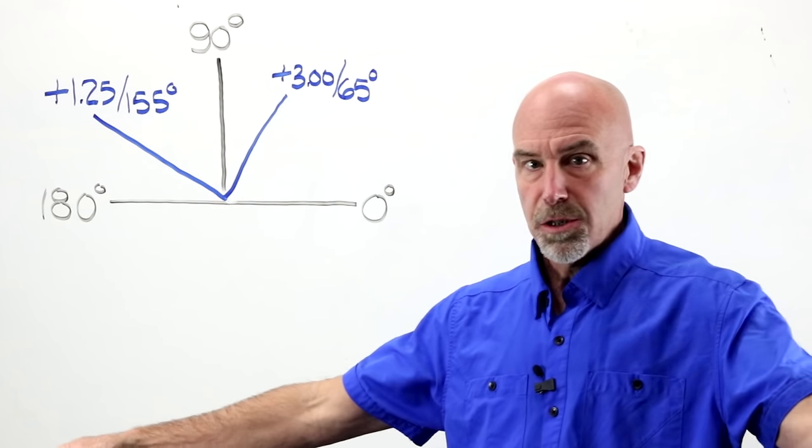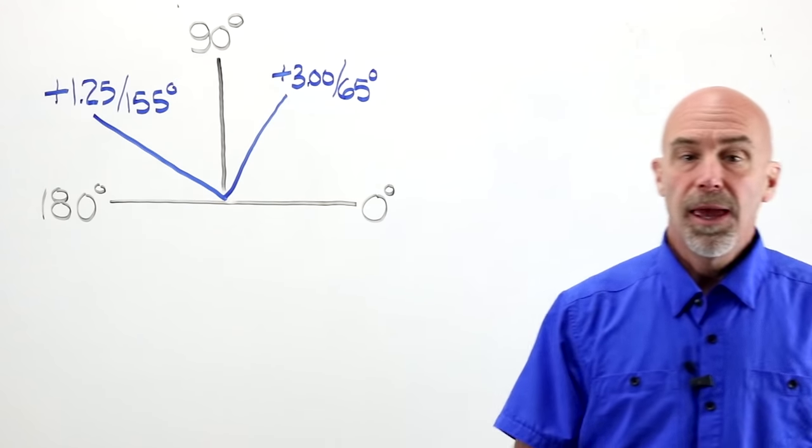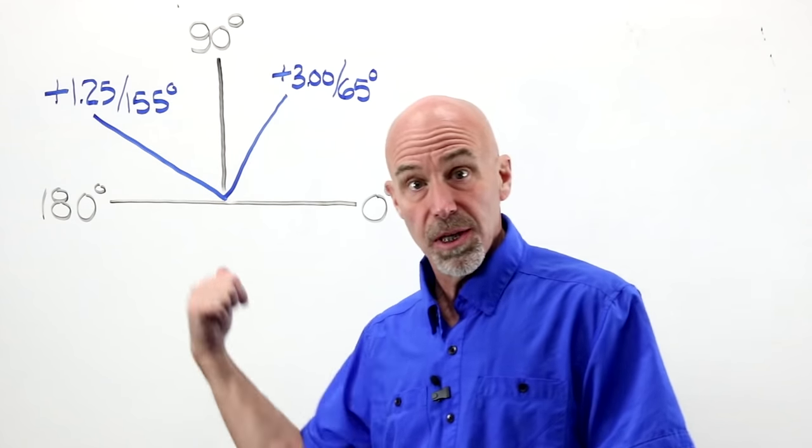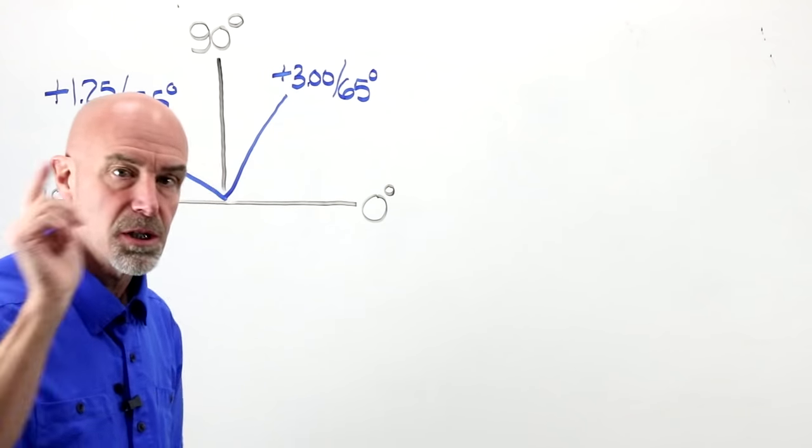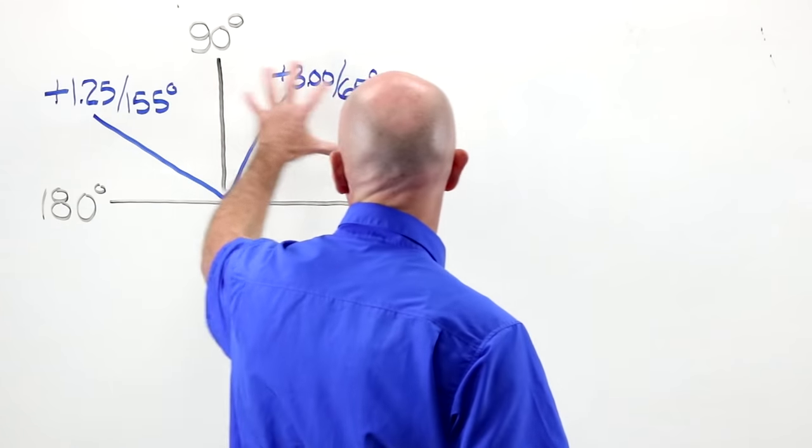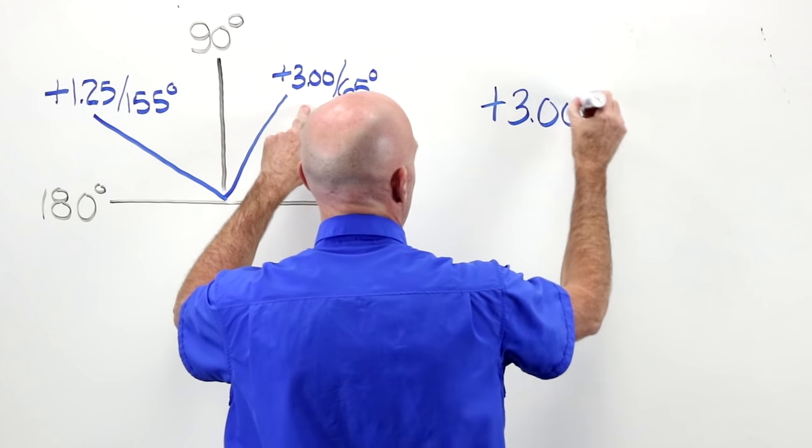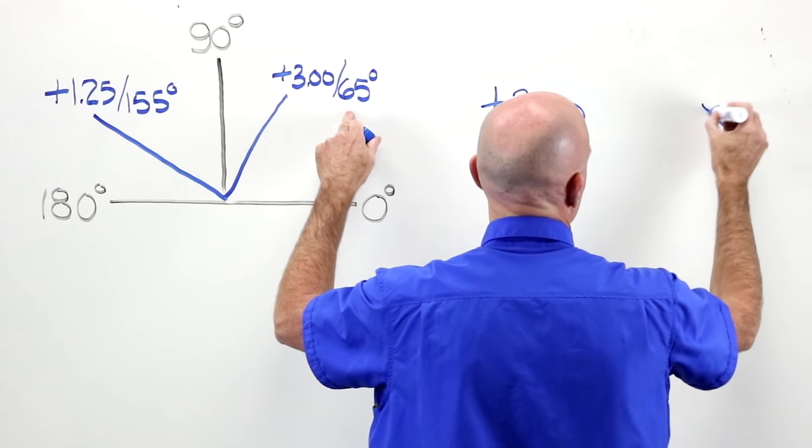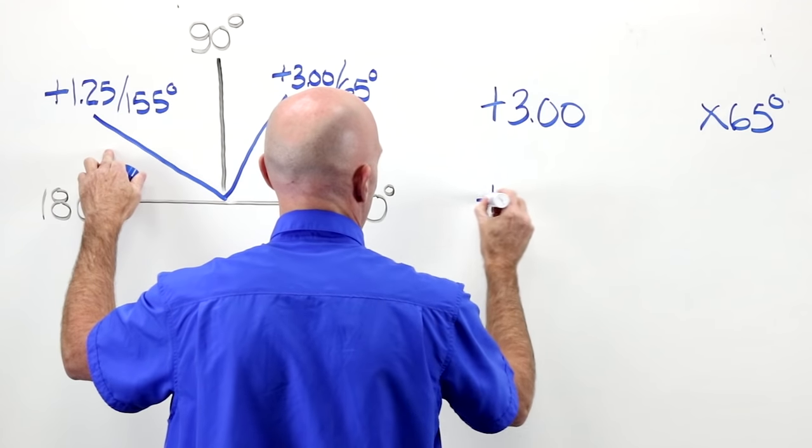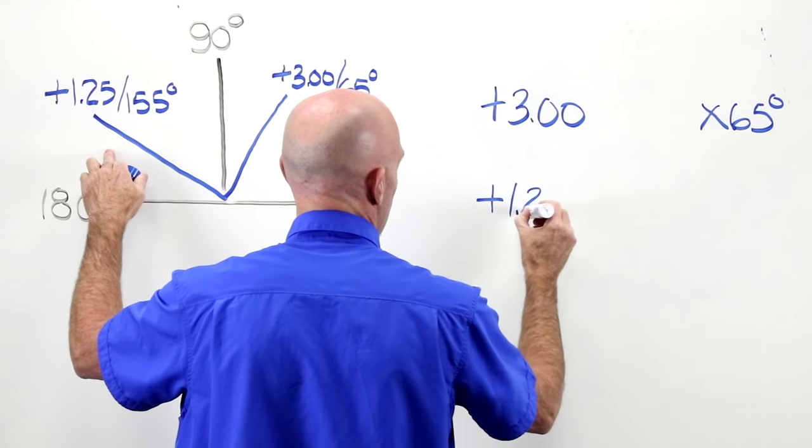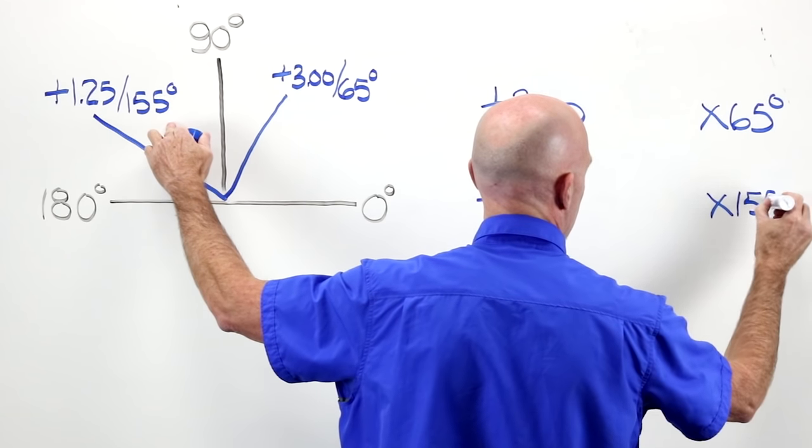Example two. Another day has passed, class is starting again, you come into the classroom, this is on the board, and I say give me the script for this, and then we can move on. What are you going to do? You're going to do the same thing we did last time. You're going to write down what you got. You've got plus three at 65 degrees, we know that. We've got plus 125 at 155 degrees.